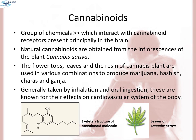Cannabinoids are a group of chemicals which interact with cannabinoid receptors present principally in the brain. Natural cannabinoids are obtained from the inflorescence of the plant Cannabis sativa. The flower tops, leaves and resin of cannabis plants are used in various combinations to produce marijuana, hashish, charas, and ganja. Generally taken by inhalation and oral ingestion, these are known for their effects on the cardiovascular system of the body. Here you can see the skeletal structure of the cannabinoid molecule and a picture of the leaves of Cannabis sativa plant.